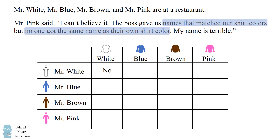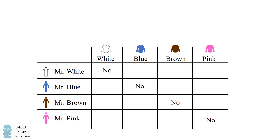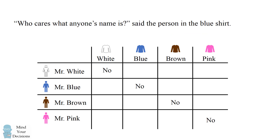Mr. White is not wearing a white shirt. Mr. Blue is not wearing a blue shirt. Mr. Brown is not wearing a brown shirt. And Mr. Pink is not wearing a pink shirt. "Who cares what anyone's name is," said the person in the blue shirt. This implies that the person in the blue shirt is not Mr. Pink, so we can eliminate that Mr. Pink is wearing a blue shirt.